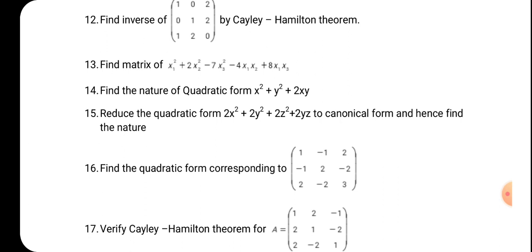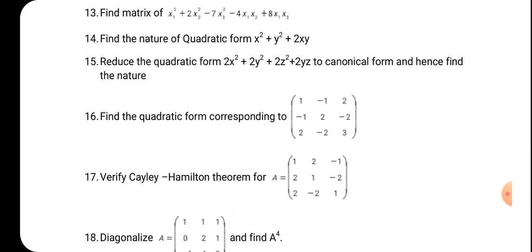Fifteenth: reduce the quadratic form to canonical form and hence find the nature. First convert to normal form by applying orthogonal transformation, then decide the nature based on the Eigenvalues. Sixteenth: find the quadratic form corresponding to a given matrix. The formula is Q equal to X transpose AX — you will get the quadratic expression.